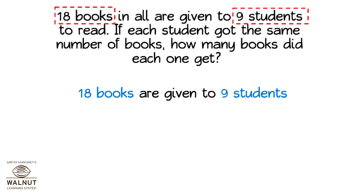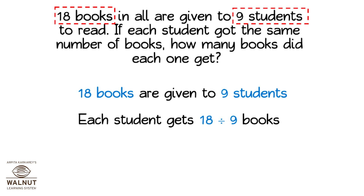So let's divide to find out the answer. Each student gets 18 divided by nine books. So 18 divided by nine is two. That means each student gets two books.